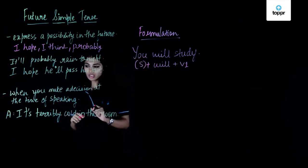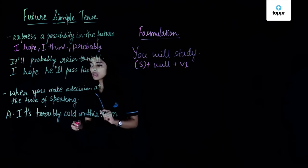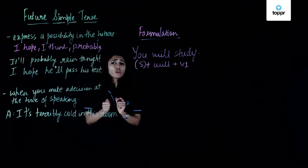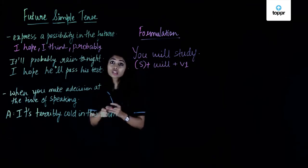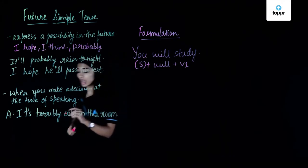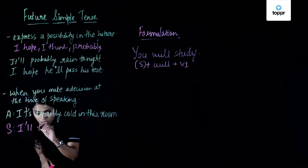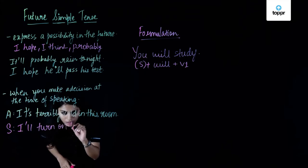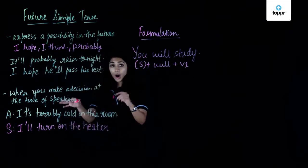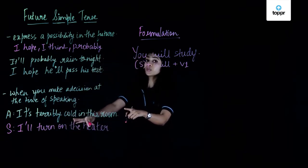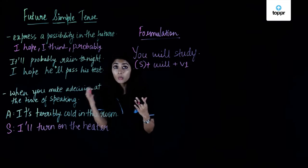The second use is when you make a decision at the time of speaking. For example, my friend Arya says, 'It's terribly cold in this room.' I would then say, 'I will turn on the heater.' So that's me making a spontaneous decision for my friend Arya. We normally use this tense in dialogue when we just think about or make a decision while talking.